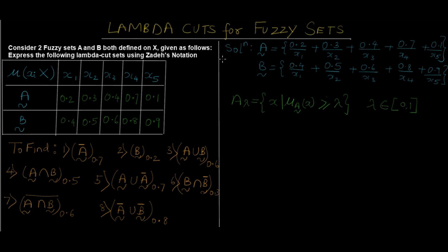As you can see on the screen, we've been given a numerical. Consider two fuzzy sets A and B both defined on X as given in the table. We need to express the following lambda cut sets using ZA notation. We've been given a table with fuzzy set A and fuzzy set B with their respective membership values, and we first need to convert this tabular form into fuzzy set form — which I've done in the solution part.